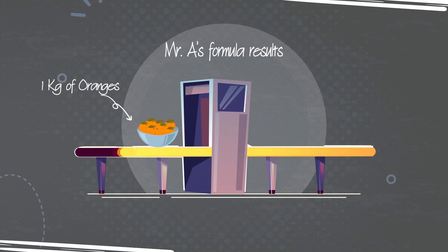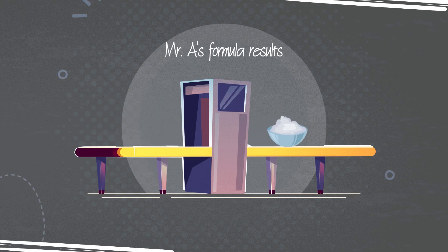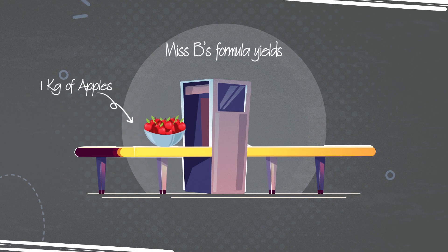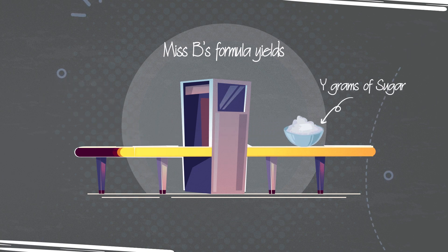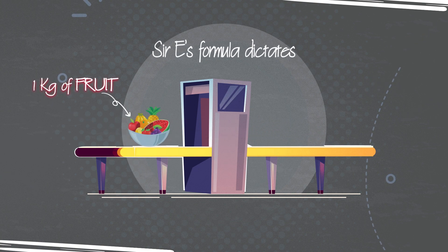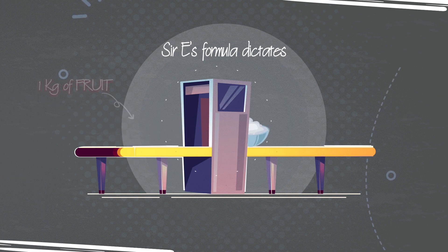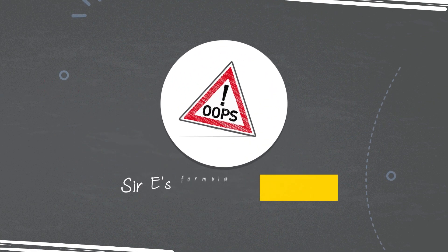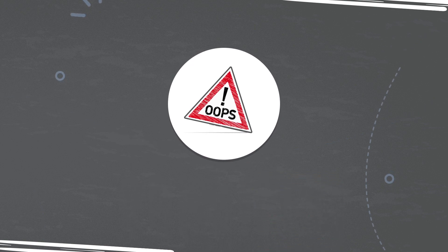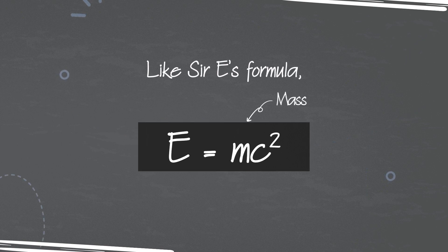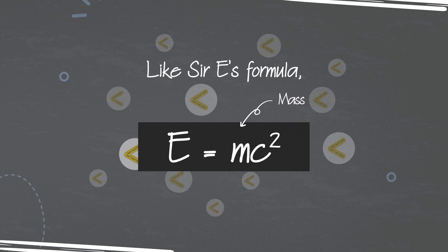Mr. A's formula results in X grams of sugar after processing 1 kilogram of oranges. Ms. B's formula yields Y grams of sugar processing 1 kilogram of apples. Sir E's formula dictates that 1 kilogram of processed fruit would yield Z grams of sugar. Sir E's formula is unreliable, failing to provide an ascertainable result. Like Sir E's formula, E equals mc-squared lacks specificity in identifying the kind of matter comprising the mass, m, used in the equation.